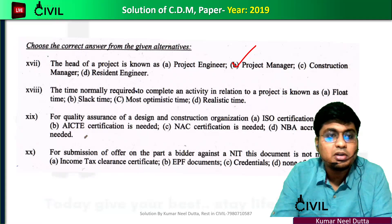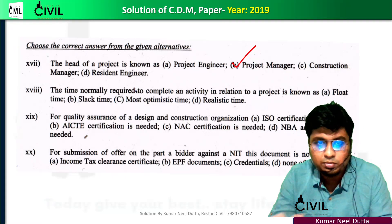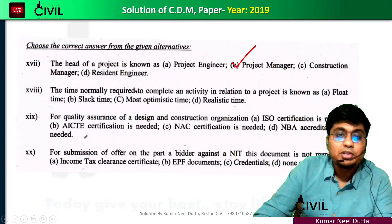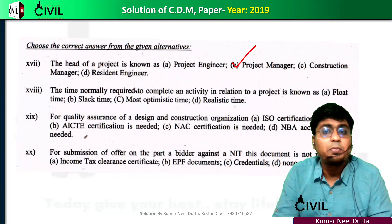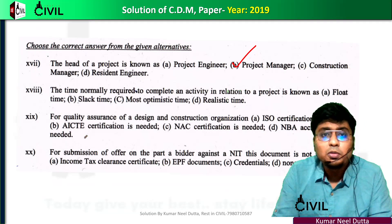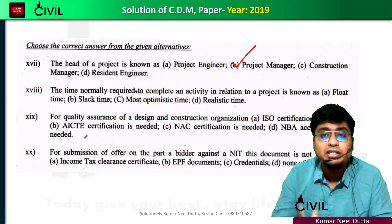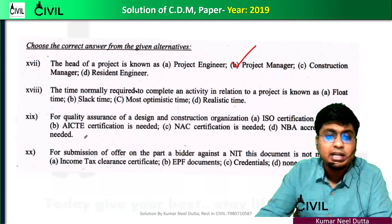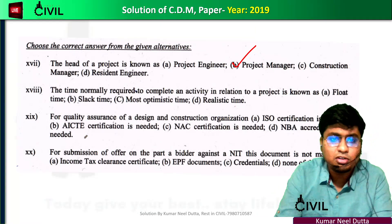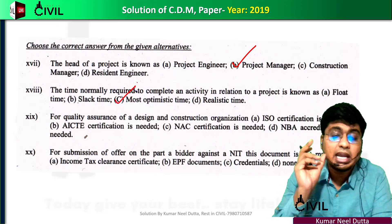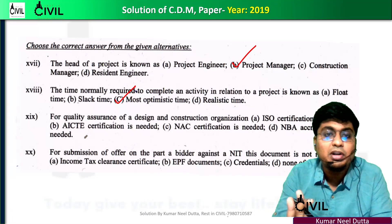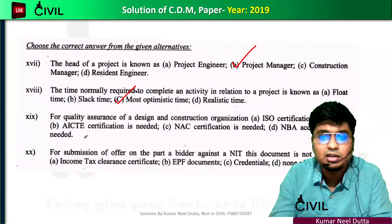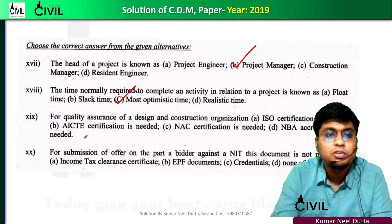Question: the time normally required to complete an activity in a project is known as what? Float and slack relate to delays. The most optimistic time is the time under ideal conditions — the best possible time. The pessimistic time is the worst-case, highest time estimate. These are key PERT time estimates.